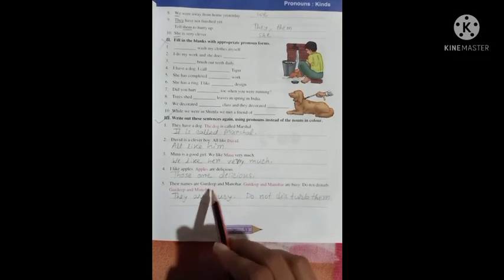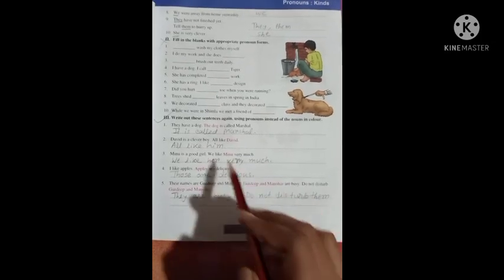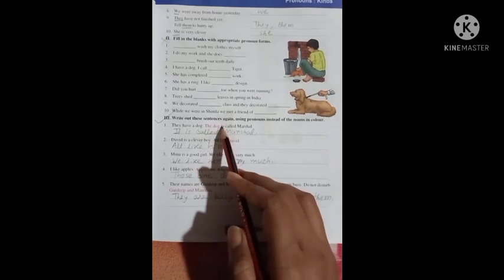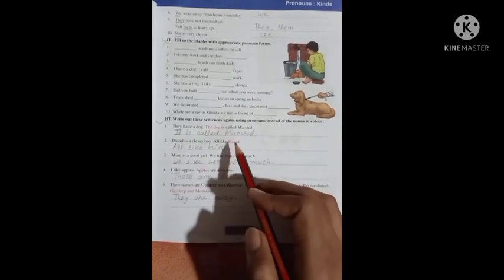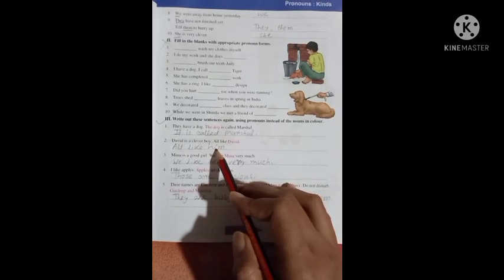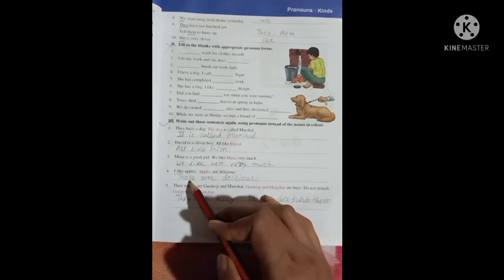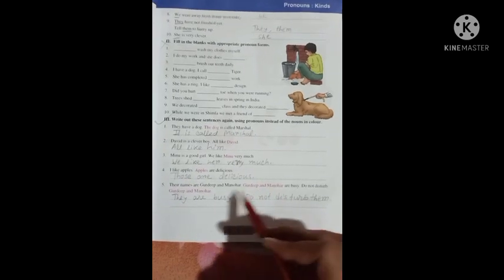So students, hope you notice that the dog is changed into it, David is changed into him, Minu is changed into her, apples are changed into those, Gurdeep and Manohar are changed into they, and here it's changed into them.